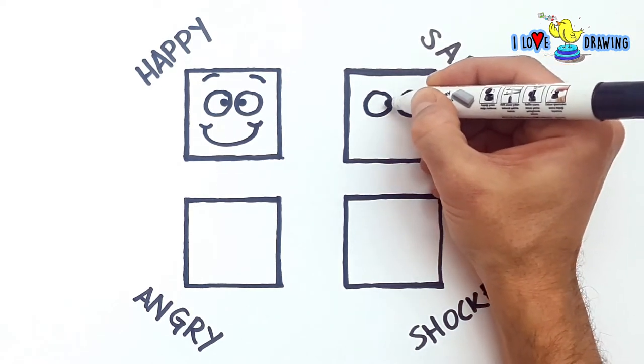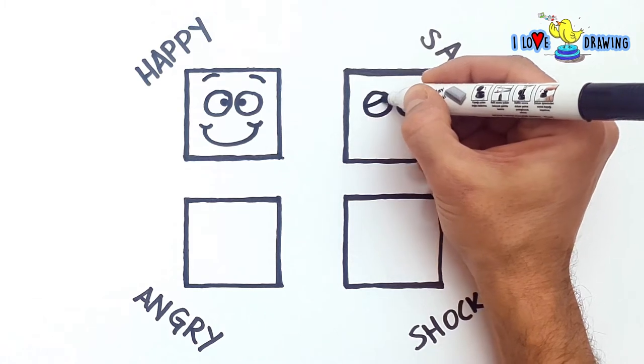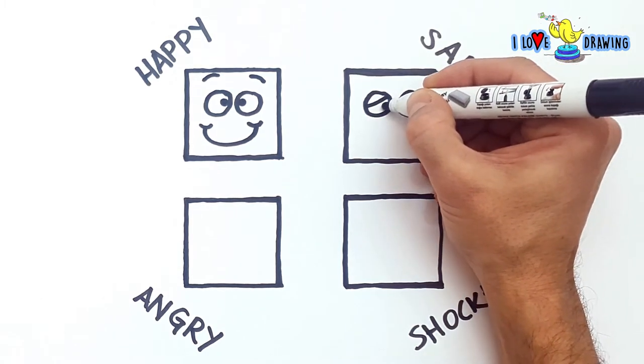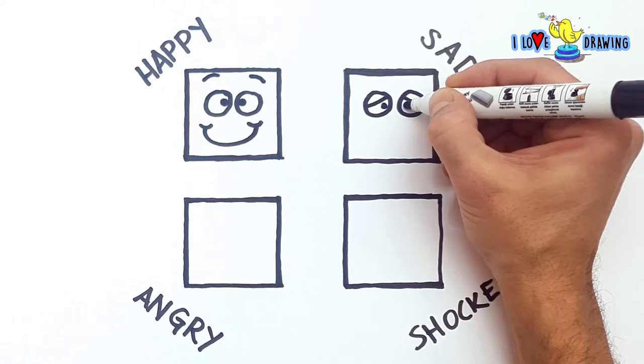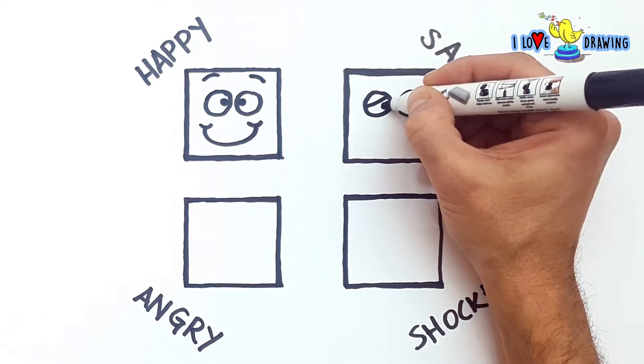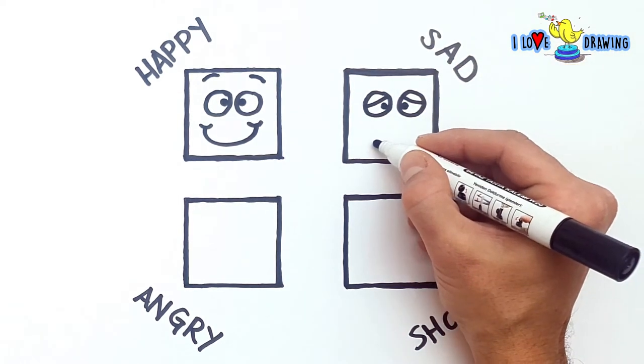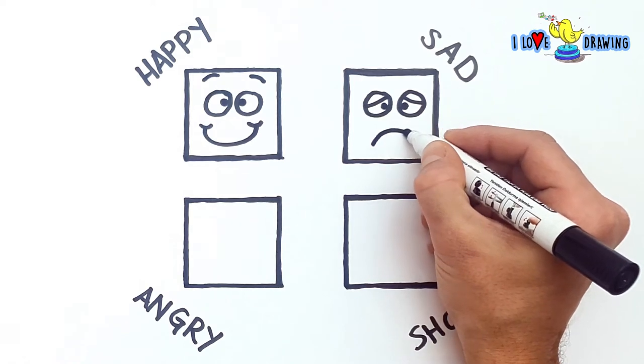Our sad face has round eyes too. But we're going to also draw the eyelids halfway closed. And the angle of the eyelids are going to be pointing up.